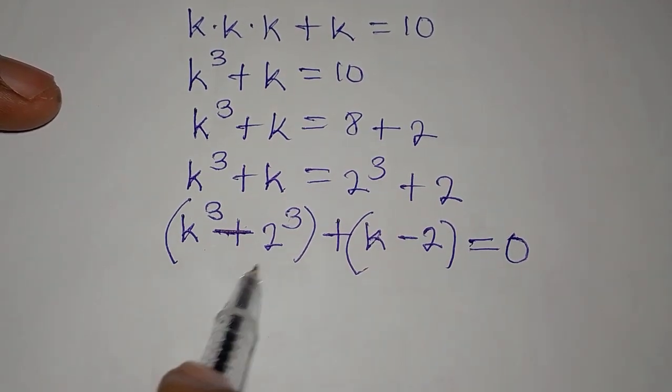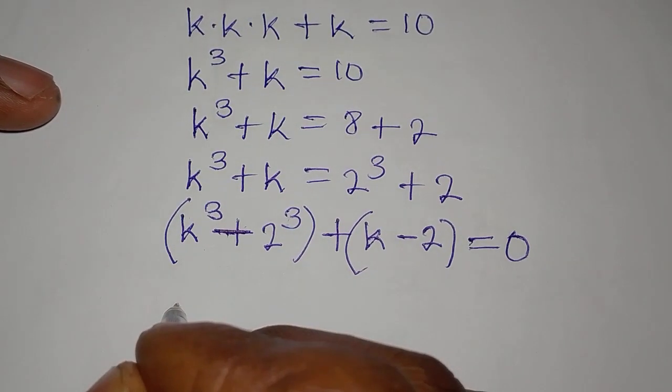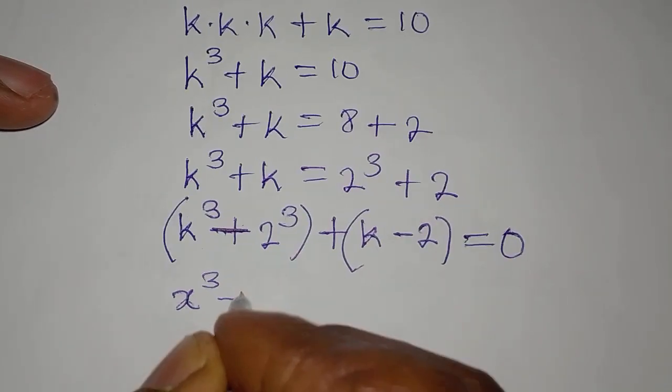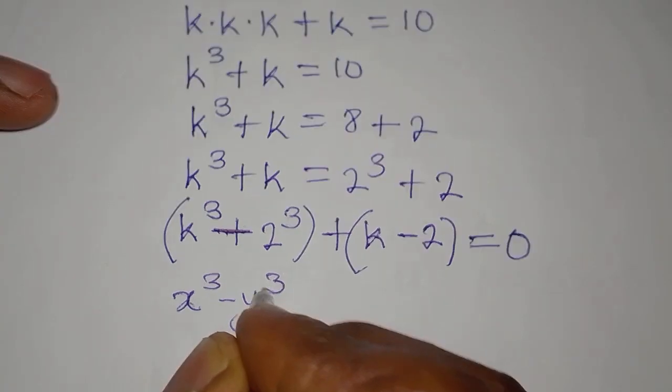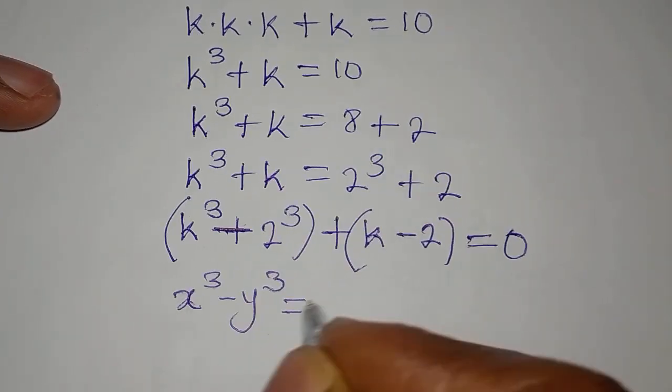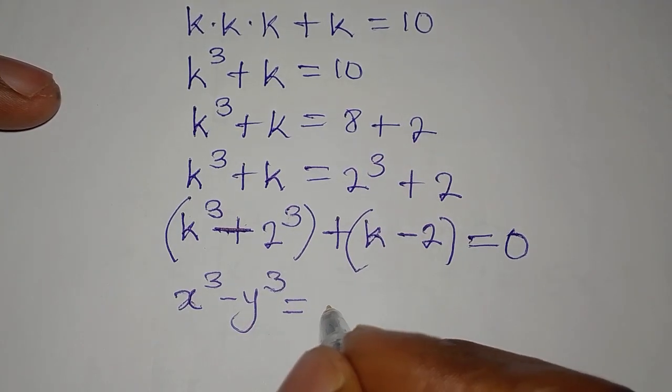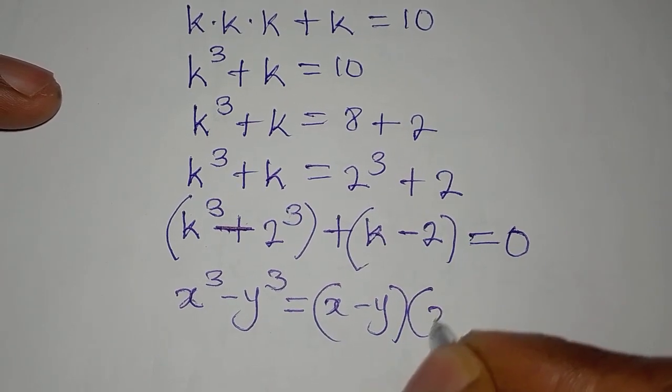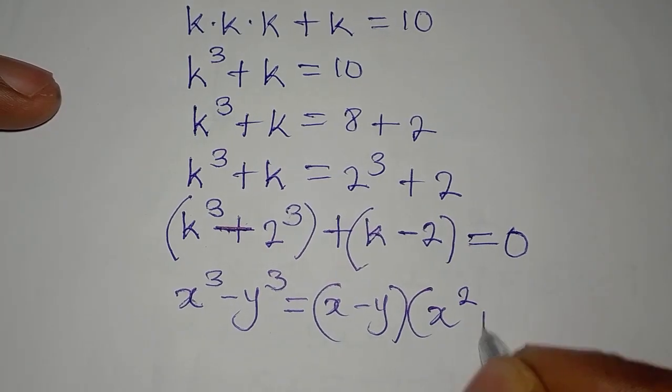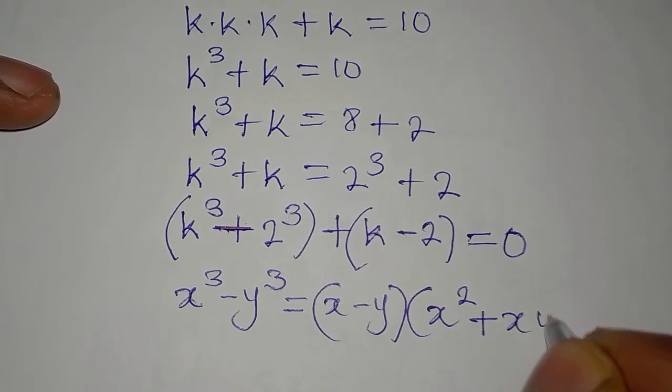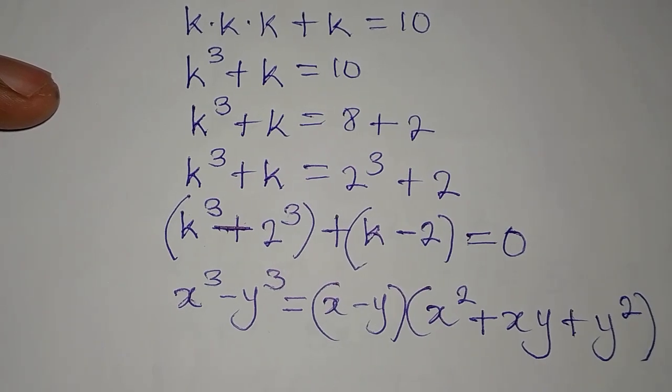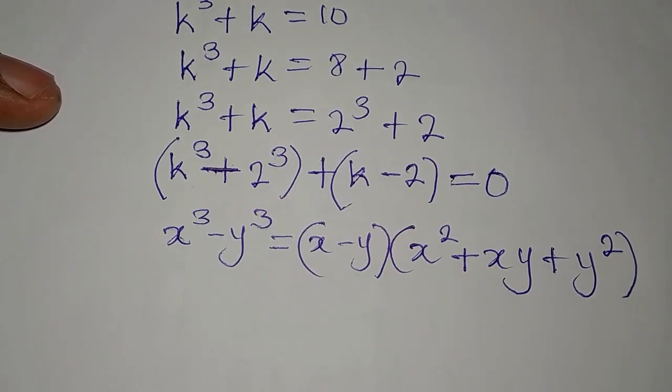Now, we have difference of 2 cubes here. And if we have x to the power of 3 and y to the power of 3 as difference of 2 cubes, this can be the same thing as x minus y into x squared plus xy plus y squared. So this is what we are going to have.